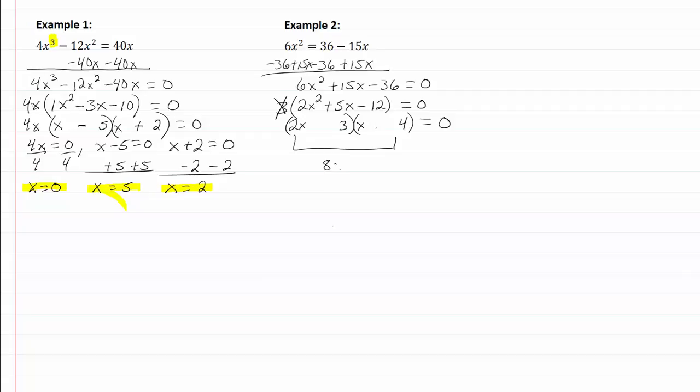So I've got 8x minus 3x, which will give me 5x, and it looks my signs are right, so I've got a plus in my last set of parentheses and a negative in my first set.